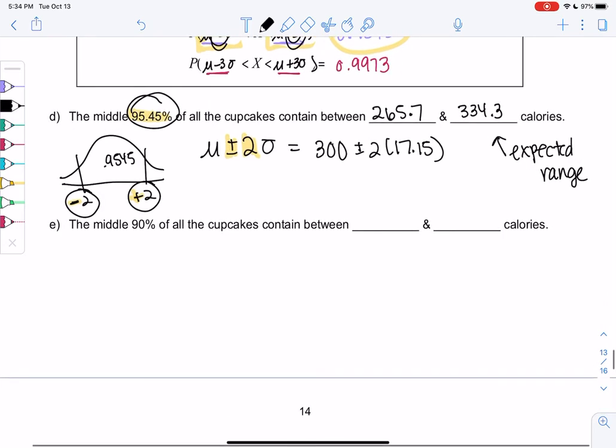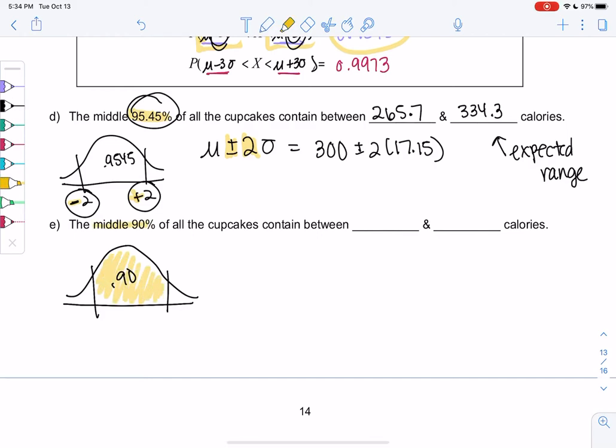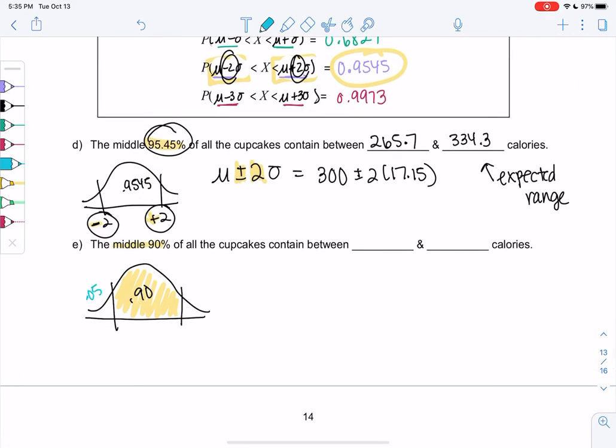But I can change the percent. So let's see what happens when I change it to 90. The middle 90%, so because it says middle, I'm going to shade the middle and not the tails. 0.90 in the middle of all cupcakes are between blank and blank calories. Now we need to find the z-score. The empirical rule does not tell me the z-score. So I'm going to figure out each tail. I get 0.05 in each side, because there's 10 left over. We want them all to add up to 1. So 5 plus 5 plus 90 gives me 100%. And what's cool is we only have to find one z-score. Let's find z, inverse norm, area to the left is 0.05.